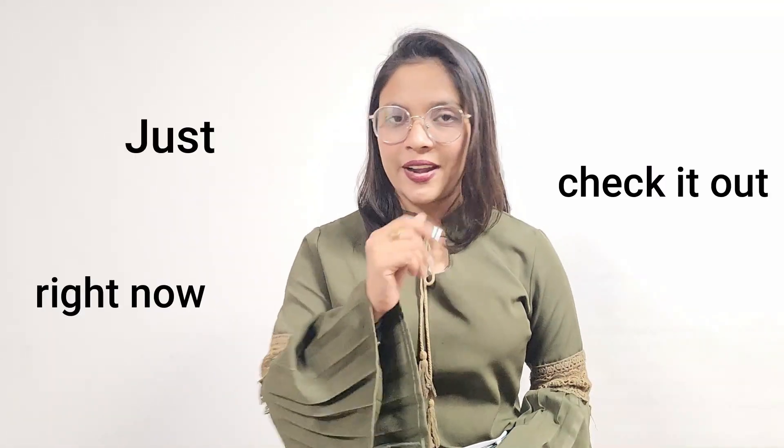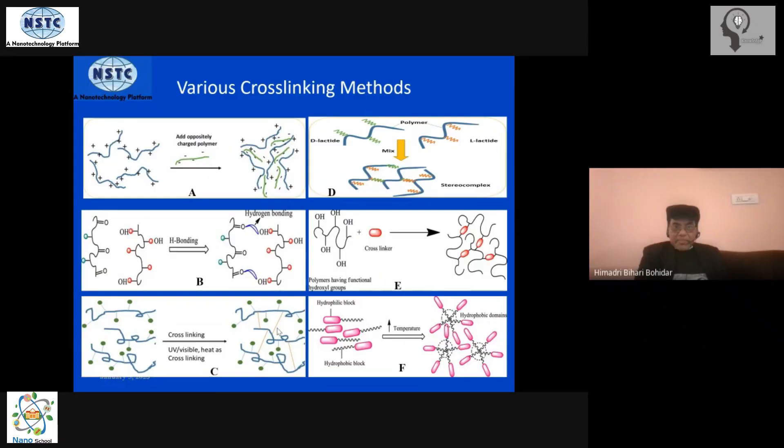Now that they form the cross-link, next there are two stereo polymers—one is L, the other one is D. Then they can be joined together to form a polymer and ultimately a gel, which is a stereocomplex.